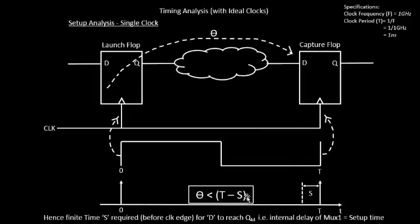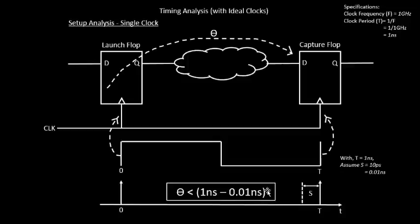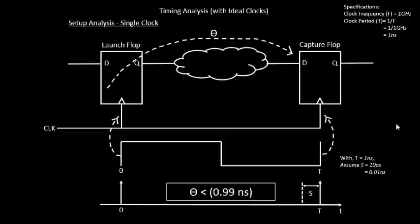For example, if T = 1ns and the capture flop setup time is 10 picoseconds (0.01ns), then the combinational delay must be less than 1ns − 0.01ns = 0.99ns. This ensures the system works at 1 GHz. This was the first level of a practical scenario. There are more practical scenarios to come, but since we're running out of time, those will be covered in the next video. Thank you.